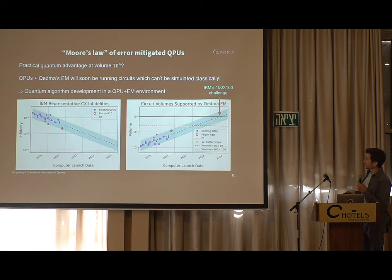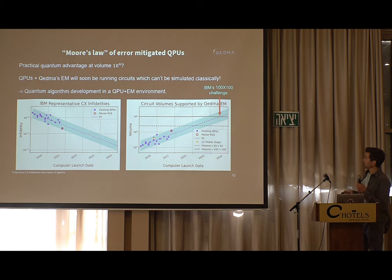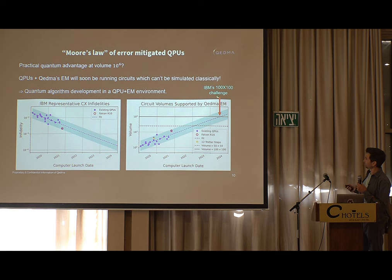Today we can handle hundreds of gates on standard IBM machines. With the state-of-the-art machine, we can handle thousands of gates. Extrapolating to the future, by the middle of next year we will reach IBM's 100-by-100 volume challenge — a circuit volume of 10^4.